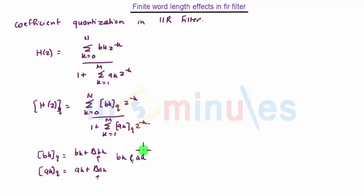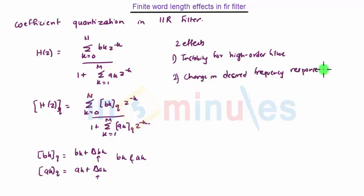The primary effect of quantizing filter coefficients using a finite number of bits is to change the position of poles and zeros. This has two effects. The first effect is instability for higher order filters. The second effect is change in desired frequency response. These are the coefficient quantization errors.